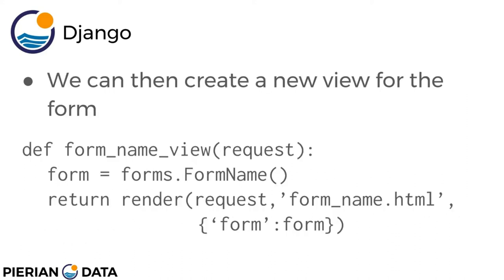Once you've imported the form you can create a new view for it, which looks really similar to creating a view and calling a model. You define a function — for example def form_name_view(request) — create a temporary object with form = forms.FormName(), then return render, passing in the request, the name of the HTML file, and the context dictionary with the form. This is very similar to how we worked with models in our views.py file.